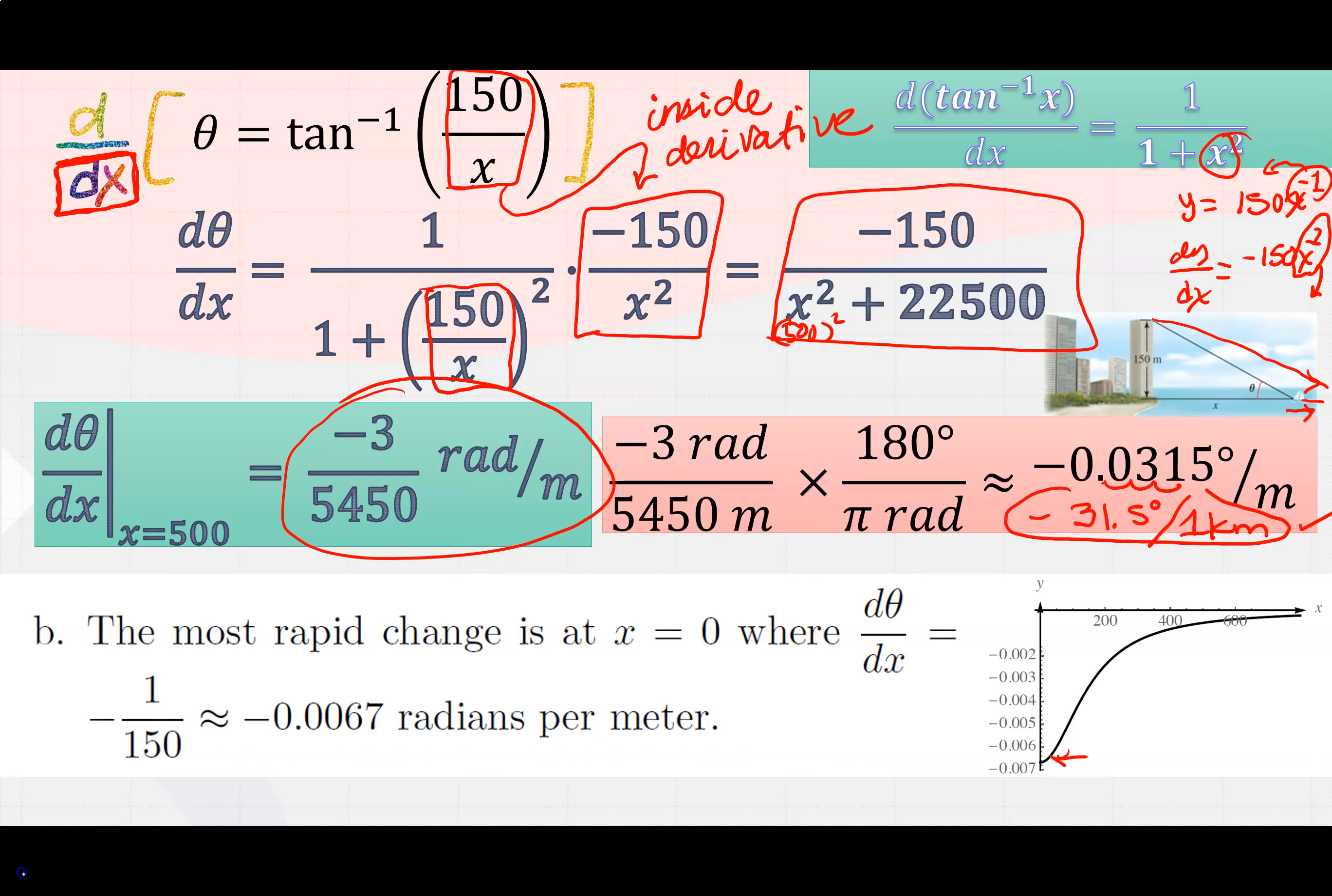Now the question is asking what is the rate of change when x is 500? So when x is already out at 500, what's going on? We'll go ahead and evaluate the derivative at x equals 500 and then simplify. So plug in 500 right here and then simplify that fraction. So it is decreasing at negative 3 radians per 5450 meters, which is not a really good thing for us to visualize realistically.